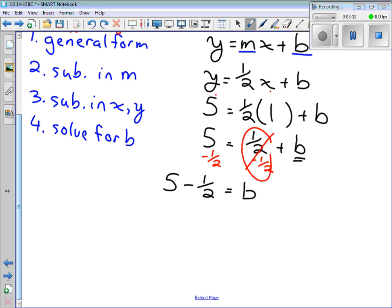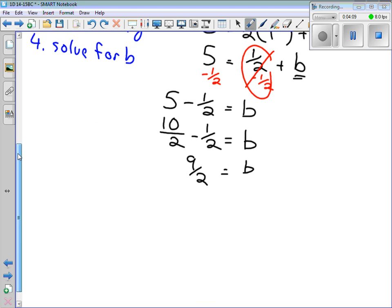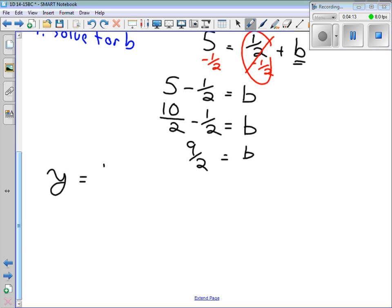And we're going to be left with b equals 5 minus 1 half. How do we do 5 minus 1 half? What do we have to do before we can subtract this? They have to have a common denominator. So our common denominator here is going to be 2. So we have to rewrite 5 as 10 over 2. So our b is going to be 10 over 2 minus 1 over 2, which is just 9 over 2. And then finally, we put it all together. We know y equals, we know our slope from the beginning, 1 half x plus our b value, 9 over 2.